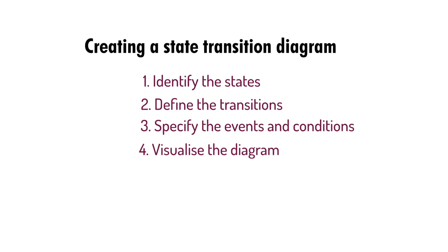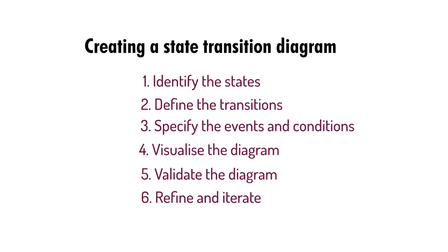Visualize the diagram using graphical representations. The diagram typically consists of circles or rectangles representing states and arrows indicating transitions between them. Label the arrows with triggering events and conditions. You can use software tools, drawing applications, or even pen and paper. Validate the diagram to ensure it accurately represents system behavior — check for completeness, correctness, and clarity. Refine and iterate based on feedback, considering edge cases, error handling, and exceptional scenarios.